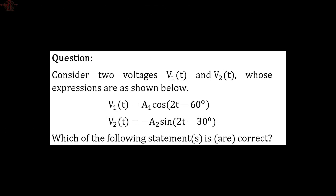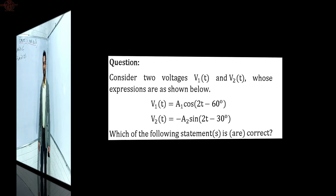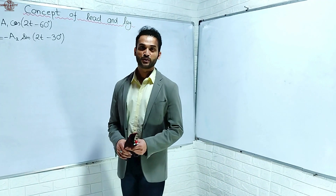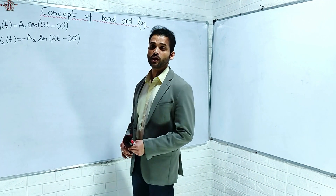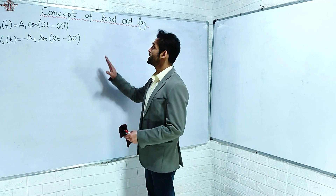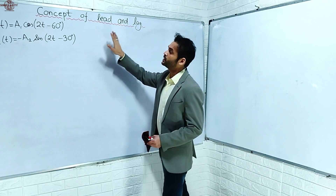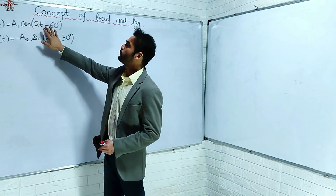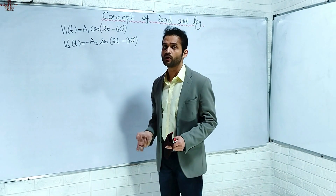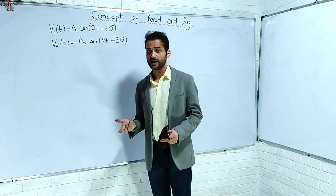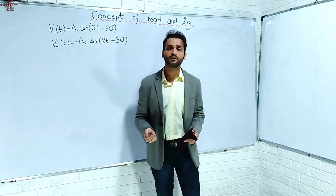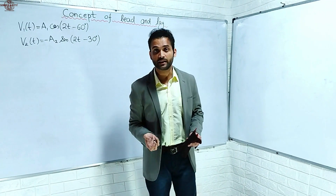Consider two voltages V1(t) and V2(t) whose expressions are as shown below. Which of the following statements are correct? Hello everyone, welcome to Singularity. Today's question is the concept of lead and lag. The voltage is given to you - which leads and which lags? By how many degrees is one lagging? There are 4 statements. Which statement is correct?